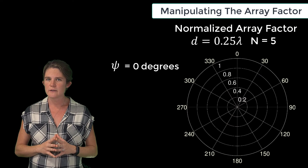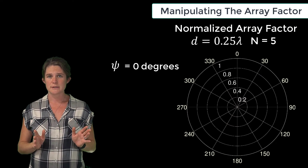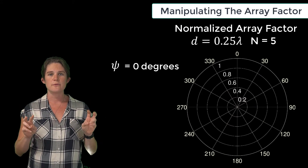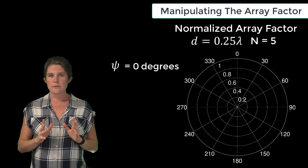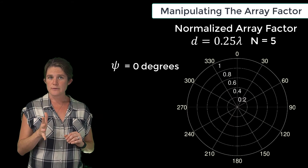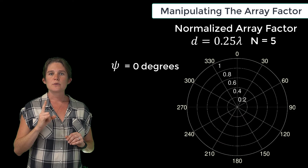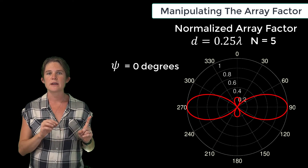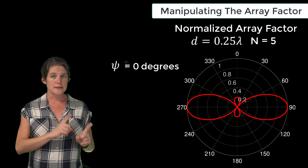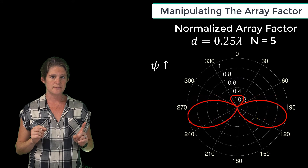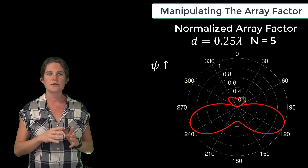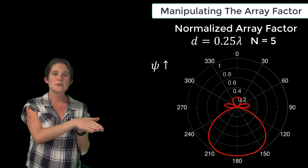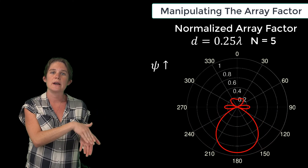Finally, what happens if we vary the phase difference between neighboring elements, phi? These sorts of arrays that are driven with variably phased signals are called phased arrays. Let's look at a uniform phased array with n equals 5 and d equal to a quarter wavelength, and we'll step the value of the phase difference. Here, increasingly positive phase shifts push the main lobe of the antenna pattern downward until the two sides converge and we get downward end-fire radiation.